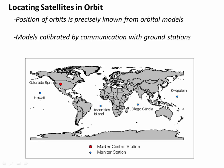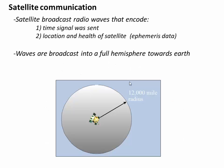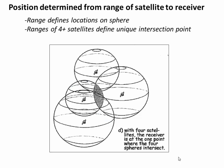Everything is run out of a master control station run by the Air Force in Colorado Springs. Satellites communicate by broadcasting a radio signal — electromagnetic radiation broadcast into a full hemisphere down towards Earth. If we can use that broadcast radio signal to determine the range or distance between the receiver and the satellite, we can ultimately use that range to find our position on the surface of Earth.